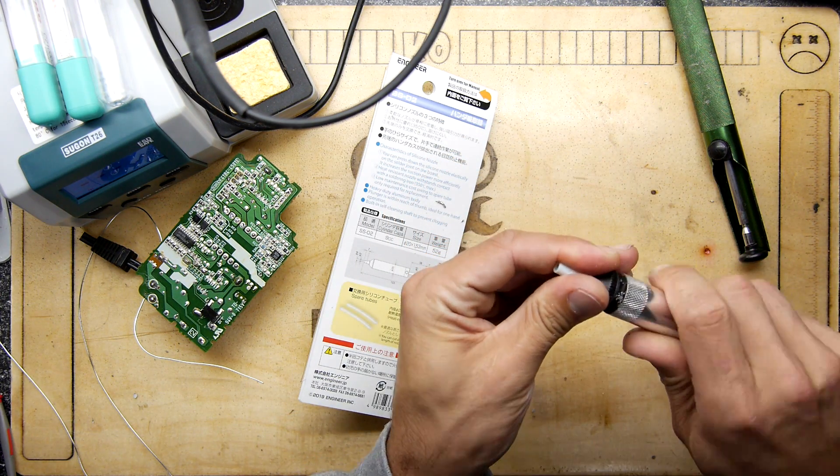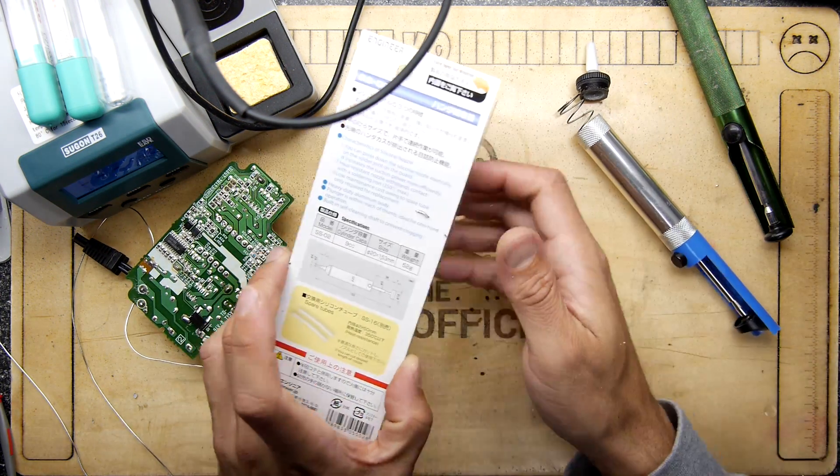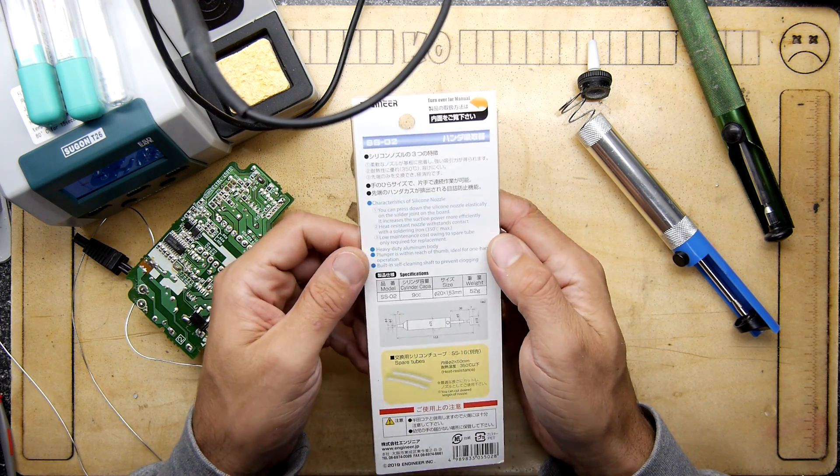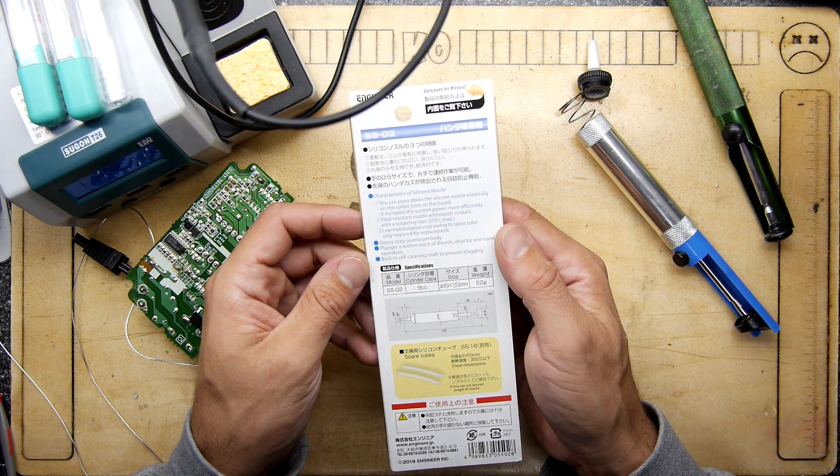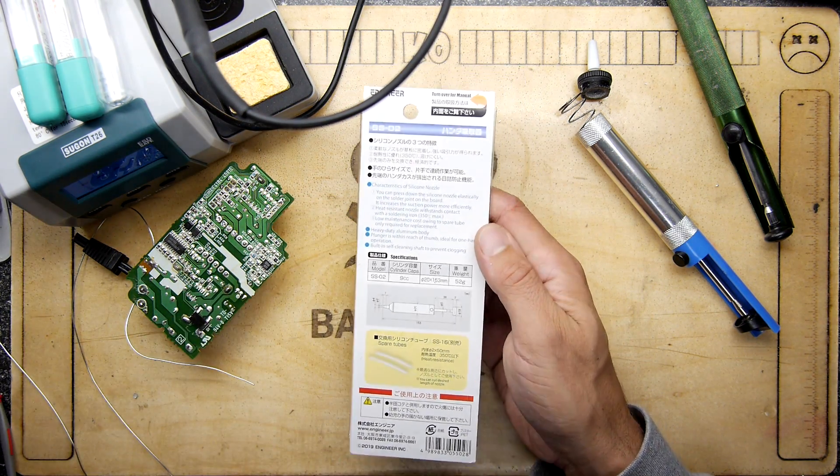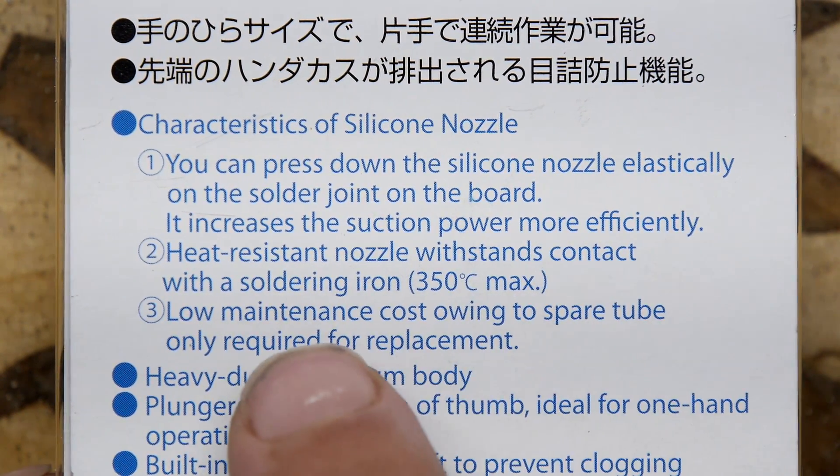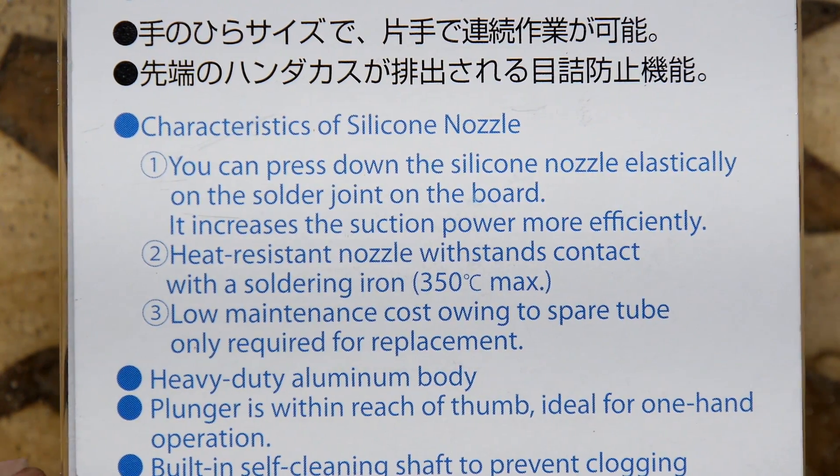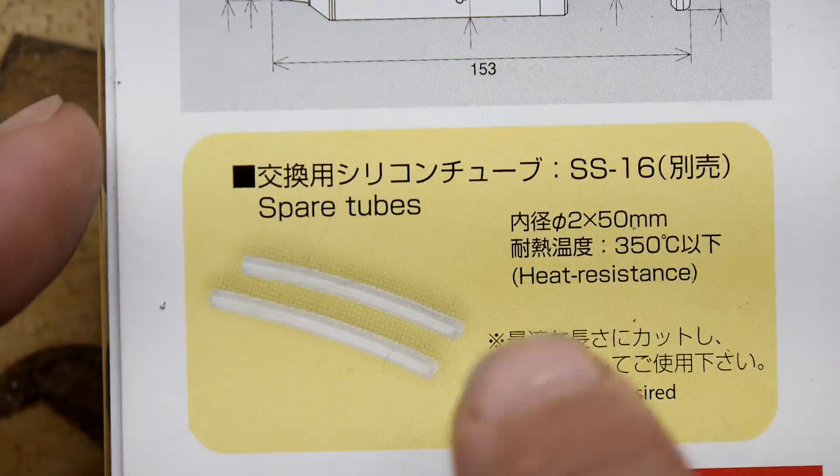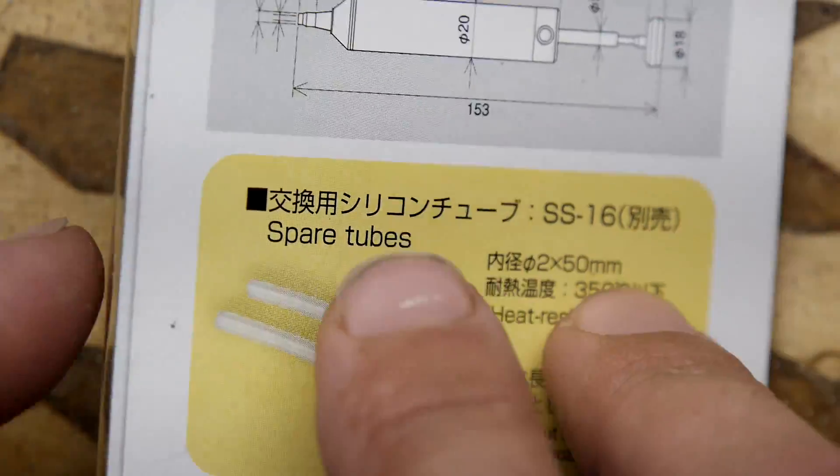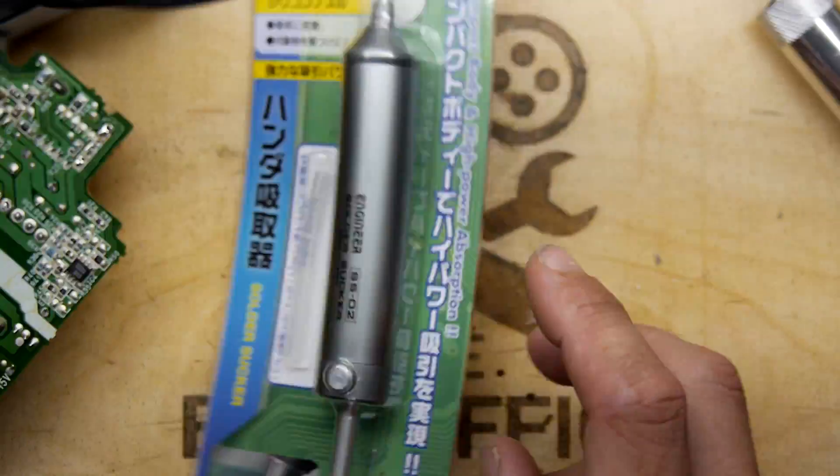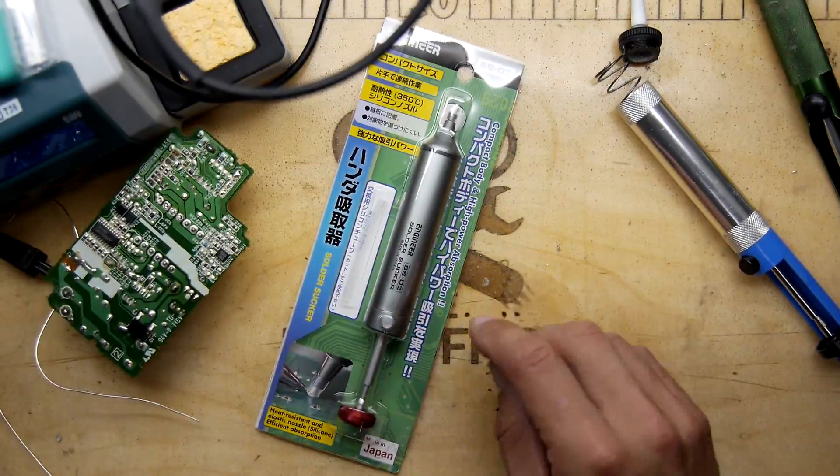So the packaging is brilliant—look at that, it's absolutely fantastic and very detailed. It's got a silicone nozzle, which means the nozzle shouldn't disappear and melt away. It has some spare tubes you can order, and it looks like it's got spare tubes in the packet, which is pretty cool.